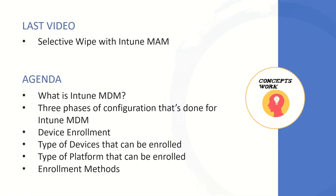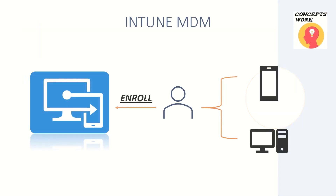Now if you are watching this series from the beginning, in the last video we discussed about Selective Wipe — a feature available with Intune MAM wherein you can get only the enterprise data removed from the device. The agenda of this video will be knowing what Intune MDM is, what are the three different phases of configuration that can be done from the Intune MDM console. Since the first one is device enrollment, we will start off with that, then talk about the types of devices that can be enrolled and the different enrollment methods available.